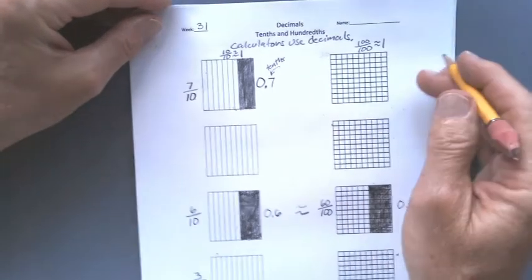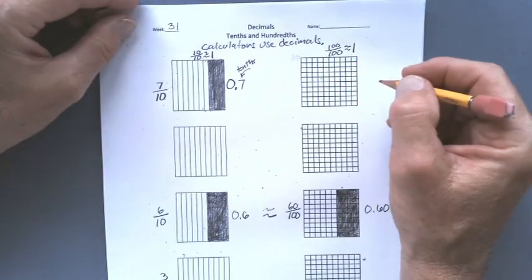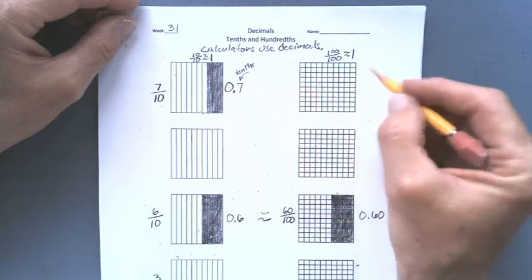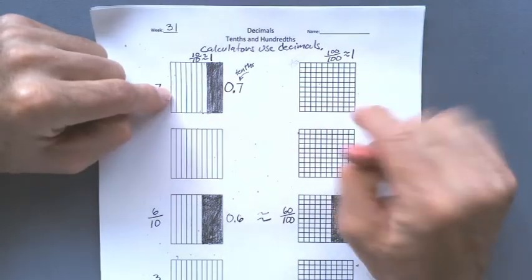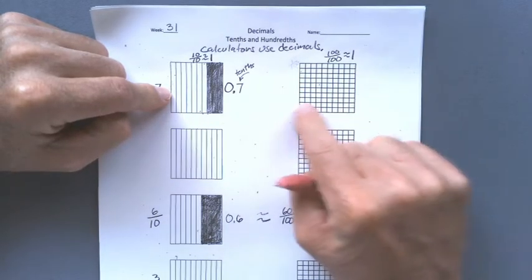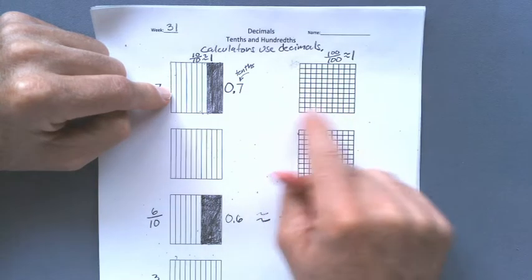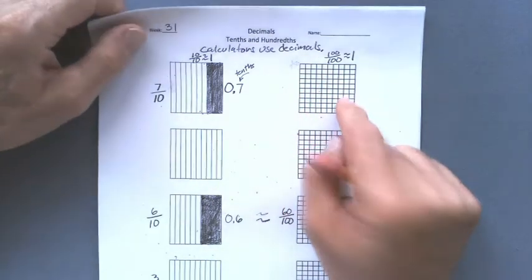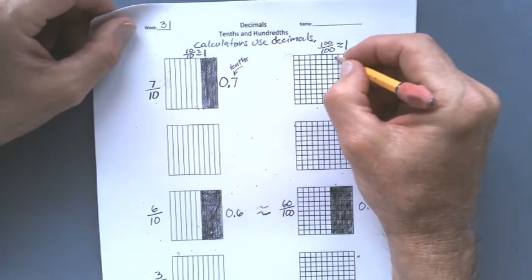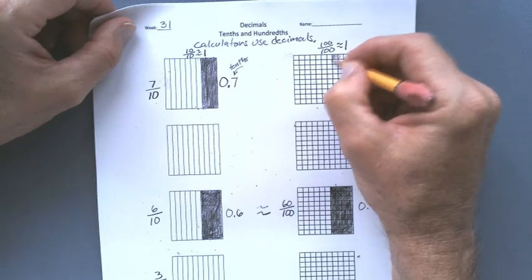Now over here we have hundredths. But I'm going to do the same thing. I'm going to take three rows over here since both these are the same size and they're divided this way the same. This one is divided this way ten ways and this way ten ways. Let me take three of these rows out too.